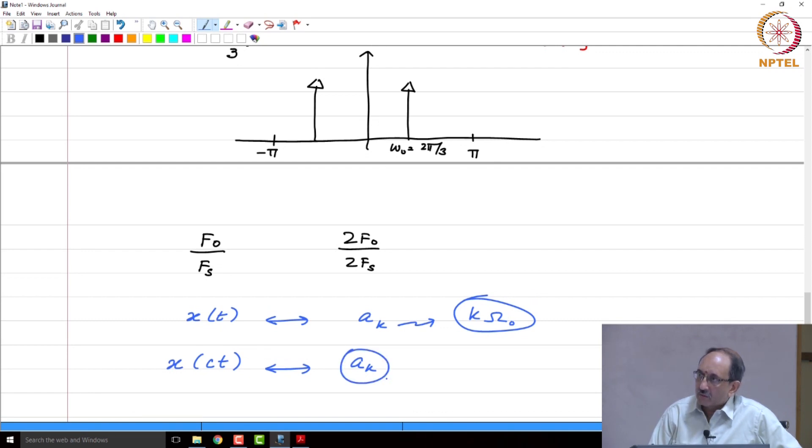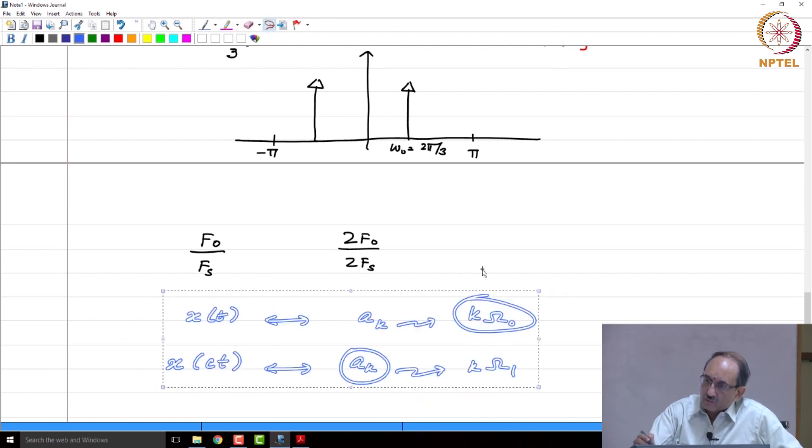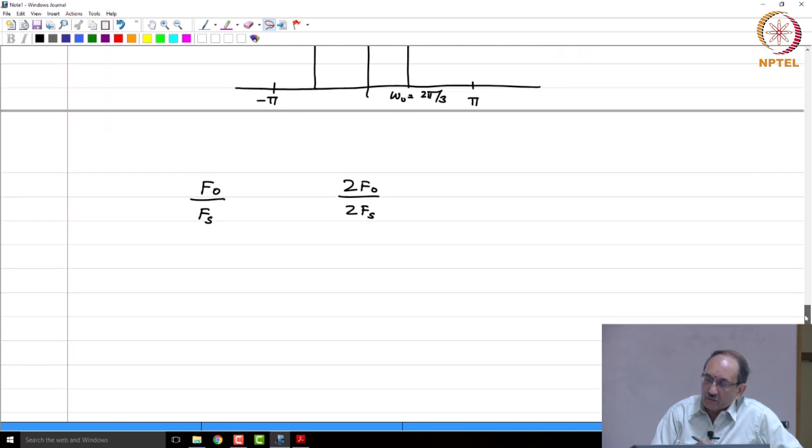However, in this case, this is the kth Fourier series coefficient, but it will occur at k times ω₁, because the periodicity of x of t and x of Ct are different and the fundamental frequency is 2π/T. T is different in both cases and hence, this kth Fourier series component will occur at k times the fundamental frequency, but the fundamental frequency here is different. And hence, as a sequence of numbers, you will not be able to tell just from a_k information whether it is the Fourier series representation of x of t or x of Ct. You need the periodicity information to map k to the actual location in frequency. So, this is what is happening here is no different. You need the sampling frequency information for you to know what this normalized frequency corresponded to in terms of actual hertz.